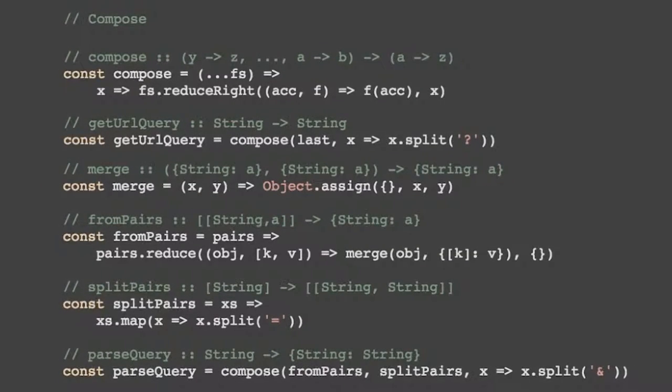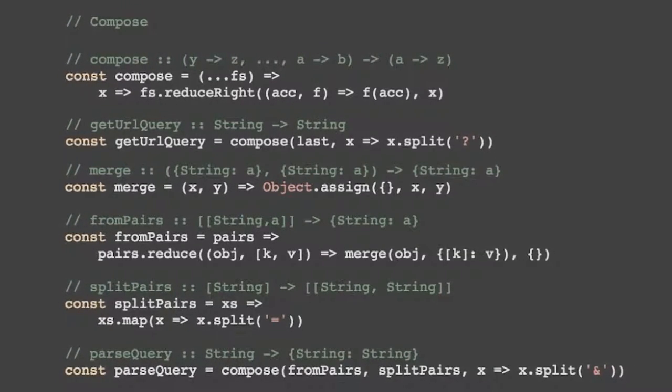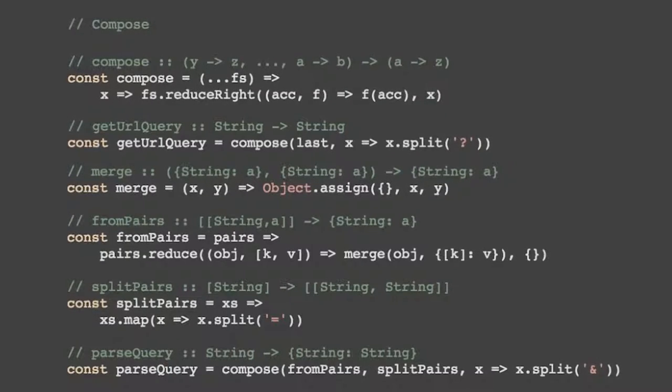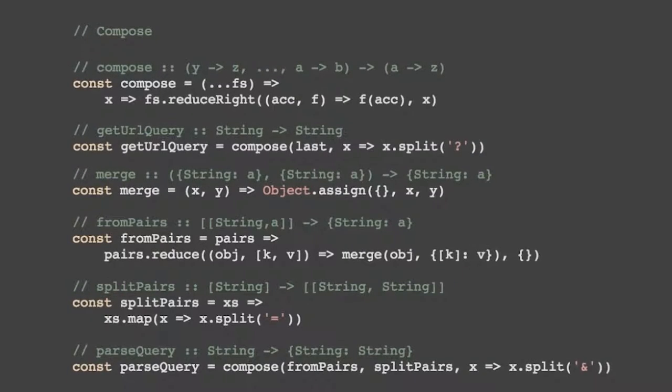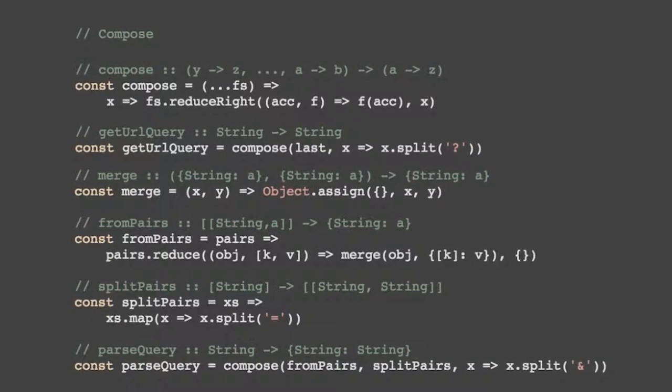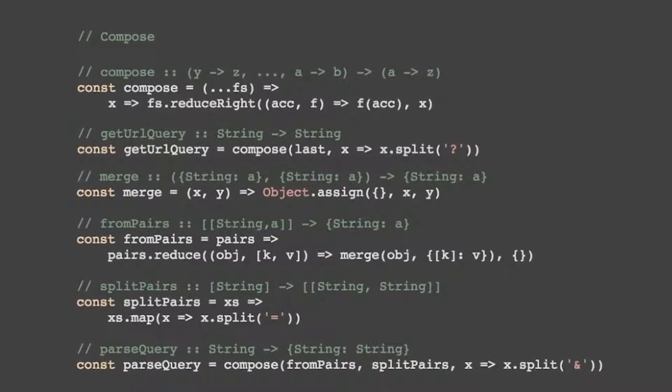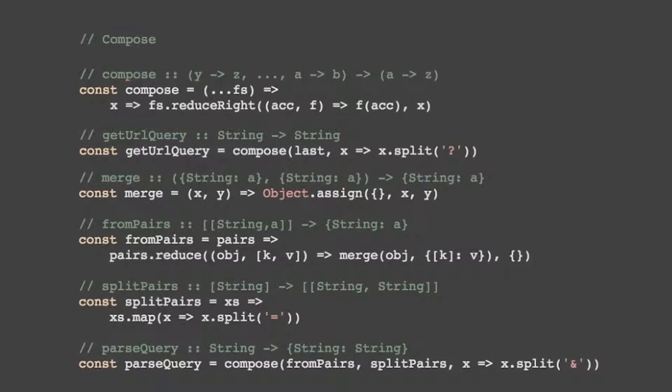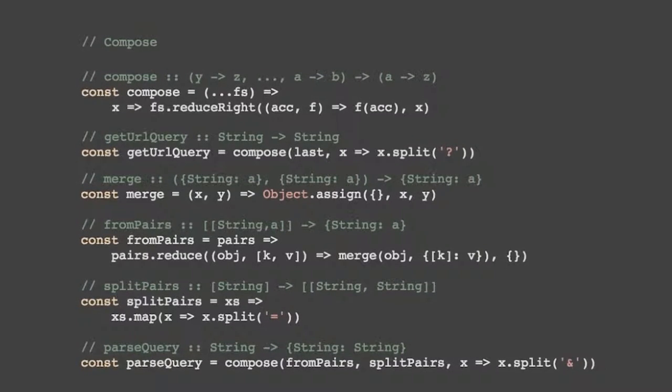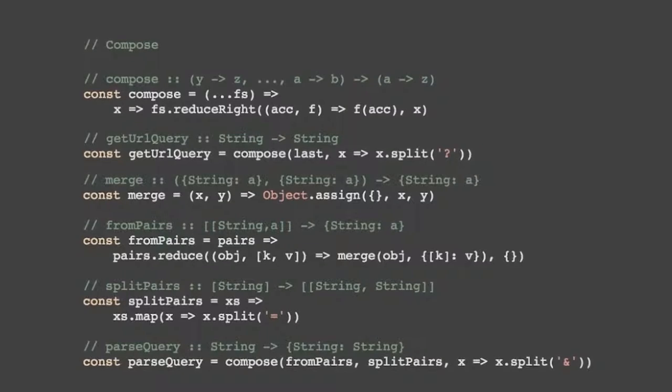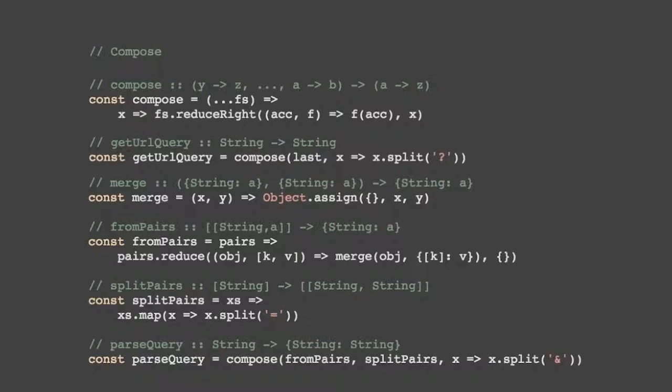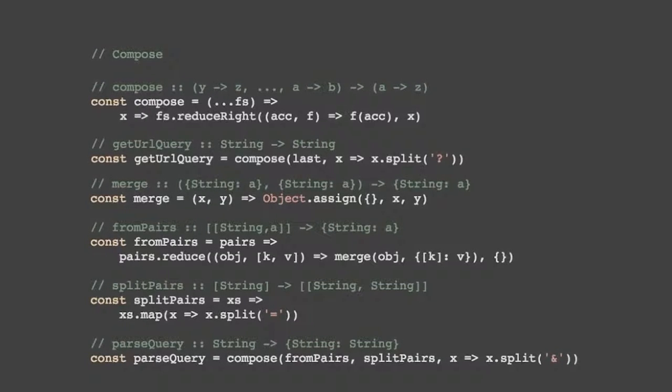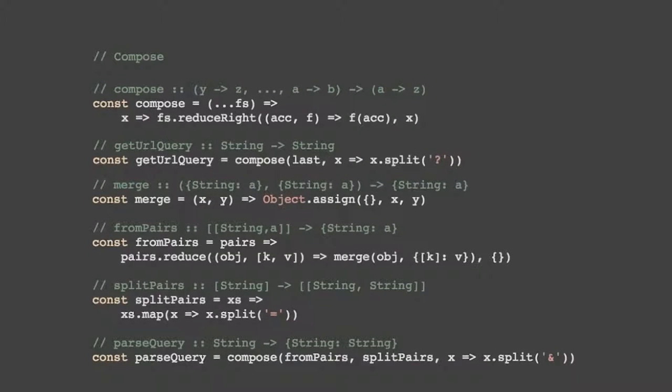One of the things that are interesting to see here is that a lot of these are not really domain-specific functions. Merge doesn't know anything about it's a URL. It has no idea what it's being used for other than joining objects. And the same is true for fromPairs. That means we're extremely reusable in our code because it doesn't have to be used for URL parsing.